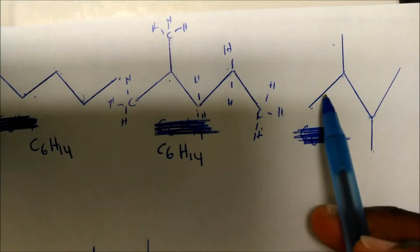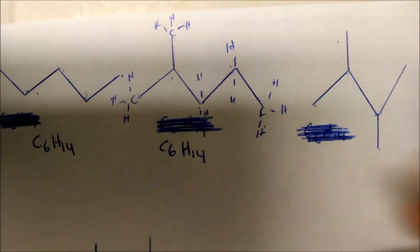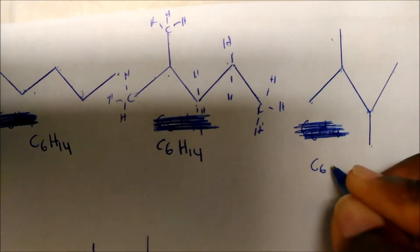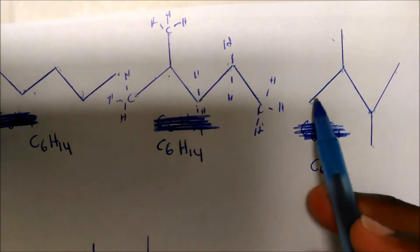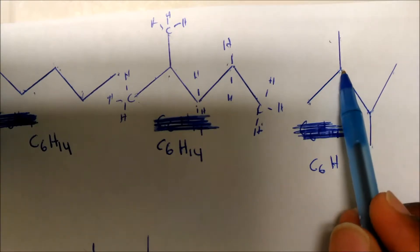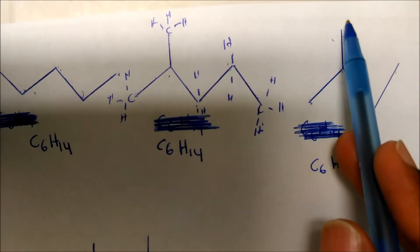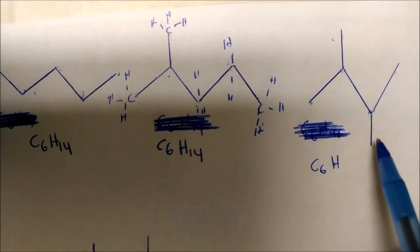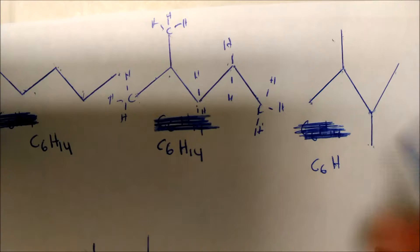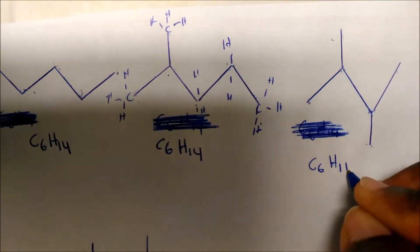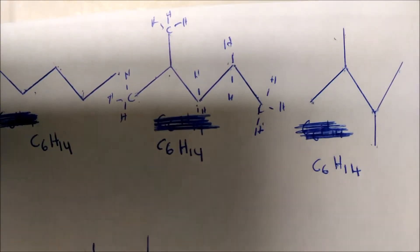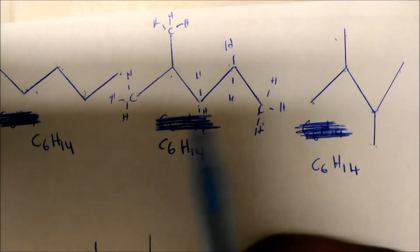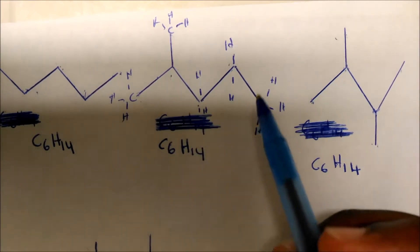How about this one? Again, every endpoint and intersection is a carbon — counting gives us 1, 2, 3, 4, 5, 6, so this is C6 also. Counting hydrogens: we have three here, one here, three here, one here because there are already three bonds, then three and three more. That adds up to a grand total of 14 hydrogens. So these all have the same molecular formula, just different atom connectivity.